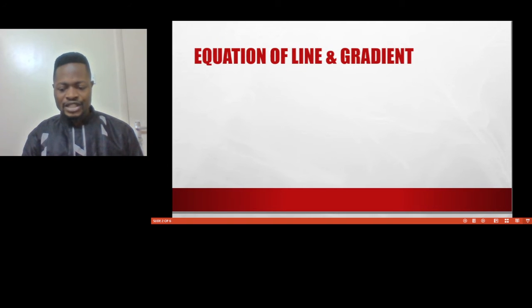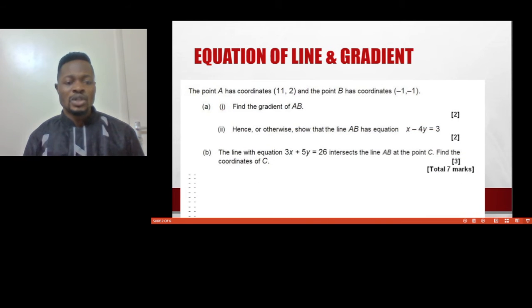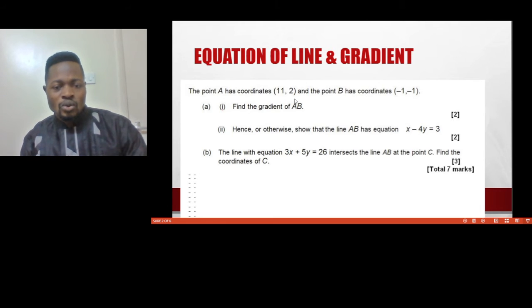Equation of line and gradient. When we talk about equation of line and gradient, it refers to our previous knowledge where we talk about Y equals MX plus C, but it goes beyond that. Here we have a question where point A has coordinate (11, 2) and point B has coordinate (-1, -1). We are to find the gradient of A to B.